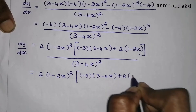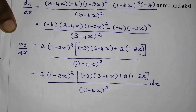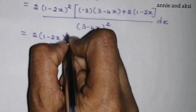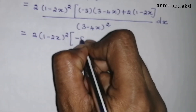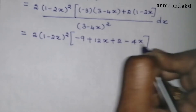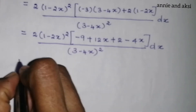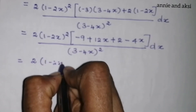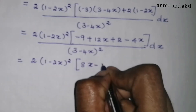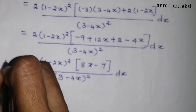Expanding the brackets: minus 9 plus 12x plus 2 minus 4x gives 8x minus 7. Therefore, dy is equal to 2 into (1 minus 2x) squared into (8x minus 7) divided by (3 minus 4x) squared, into dx. This is our required dy.